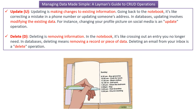The third one is update. Updating is making changes to the existing information. Going back to the notebook analogy, it is like correcting a mistake in a phone number or updating someone's address. In databases, updating involves modifying the existing data. For instance, changing your profile on social media is an update operation.